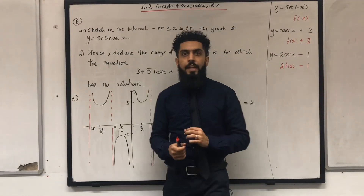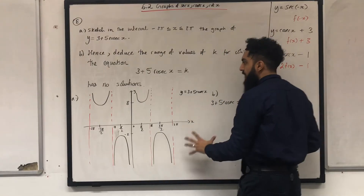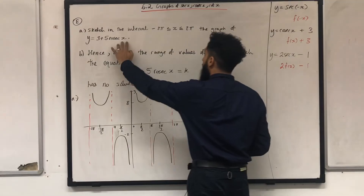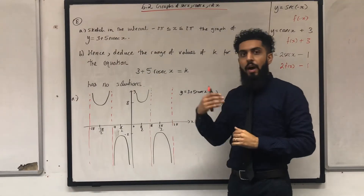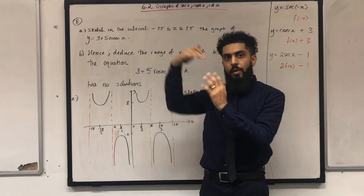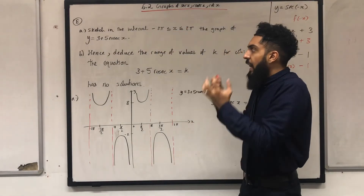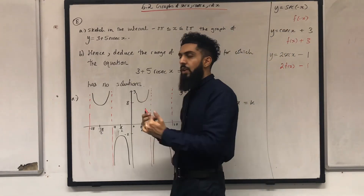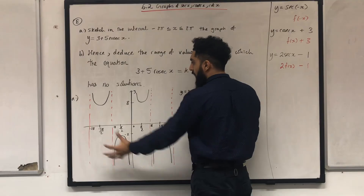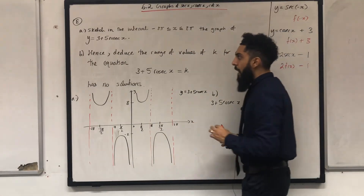For part a, you should have a graph that looks something like this. The way to obtain this graph is to start with y = cosec x, multiply the y-coordinates by 5 (so 1 and -1 become 5 and -5), then shift the graph three units upwards, taking you to 8 and -2.